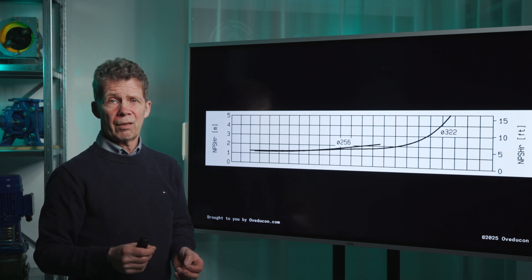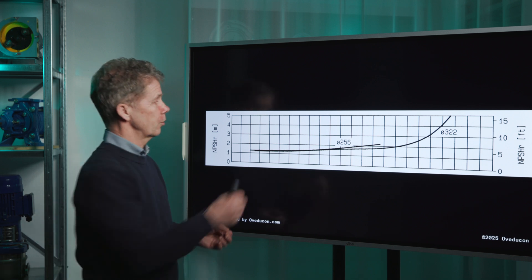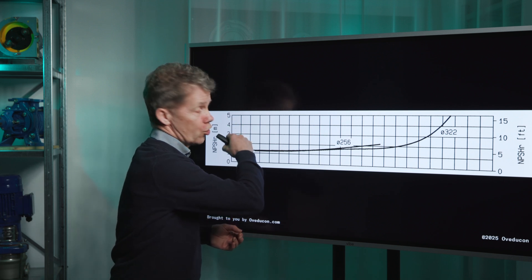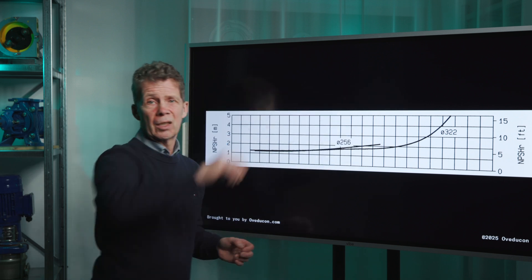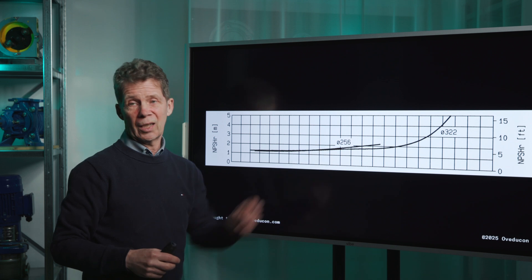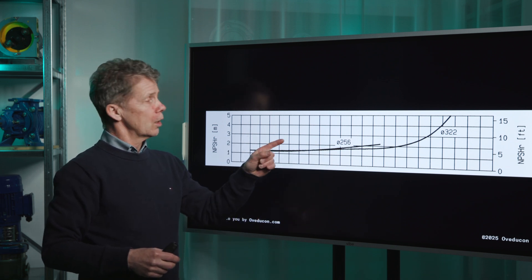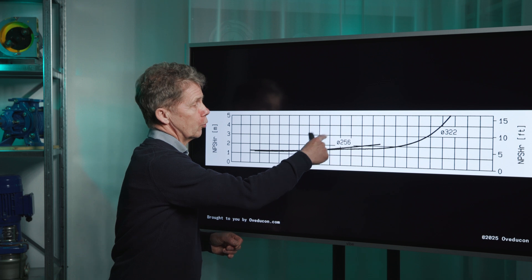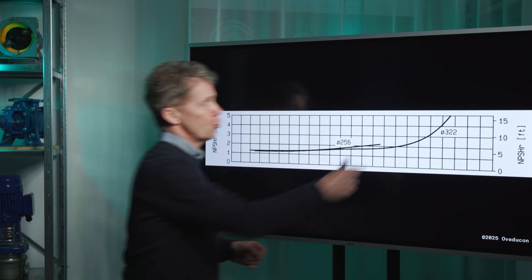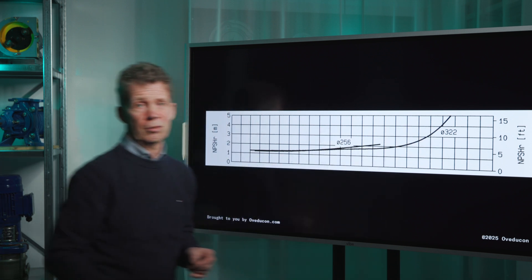The second thing that is important is the shape of your curve. Your NPSH curve has a shape always like this. It's going up like this. You see two curves. You see a curve for this diameter and you see a curve for this diameter.